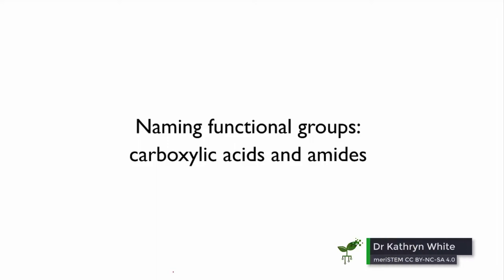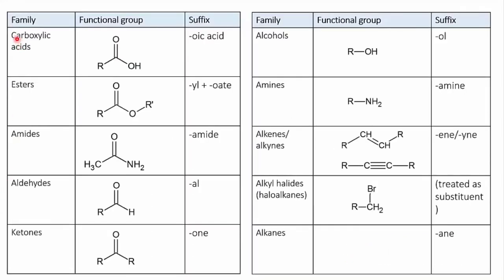In this video, we'll look at the naming of carboxylic acids and amides. Carboxylic acids and amides are structurally related. In a carboxylic acid, you have a carbonyl group with an alcohol group attached to the same carbon. The combination of a carbonyl group plus an extra oxygen is known as a carboxyl group. The hydrogen on this extra oxygen in the carboxylic acid turns out to be acidic, hence the name carboxylic acid.